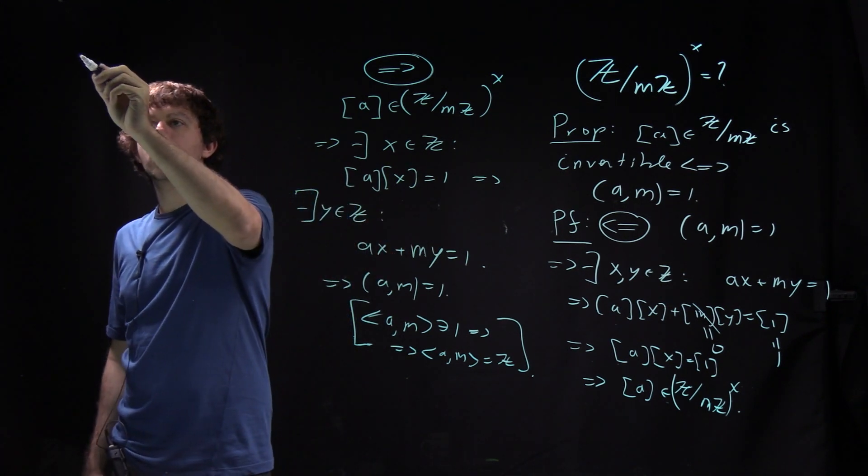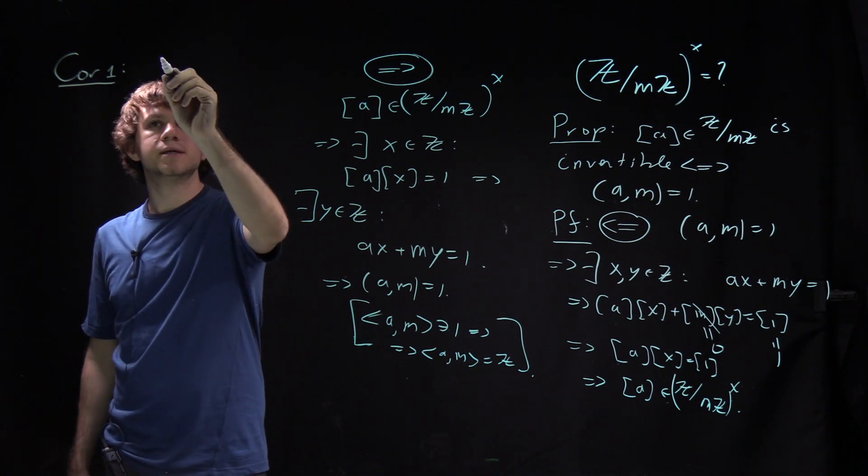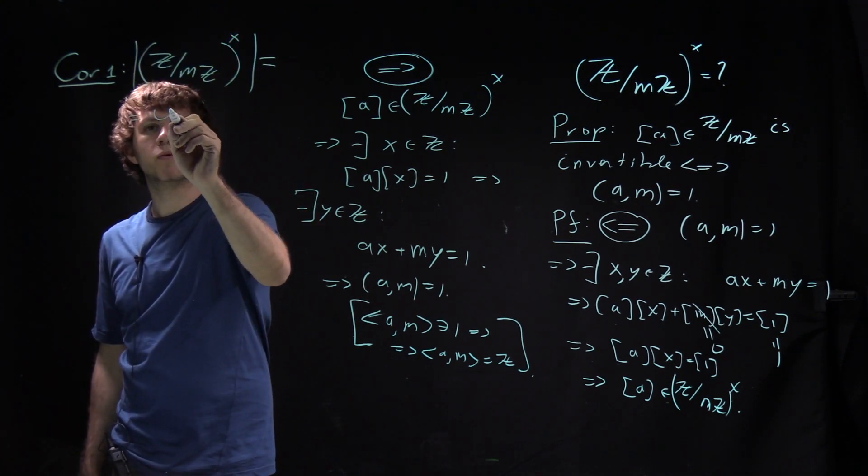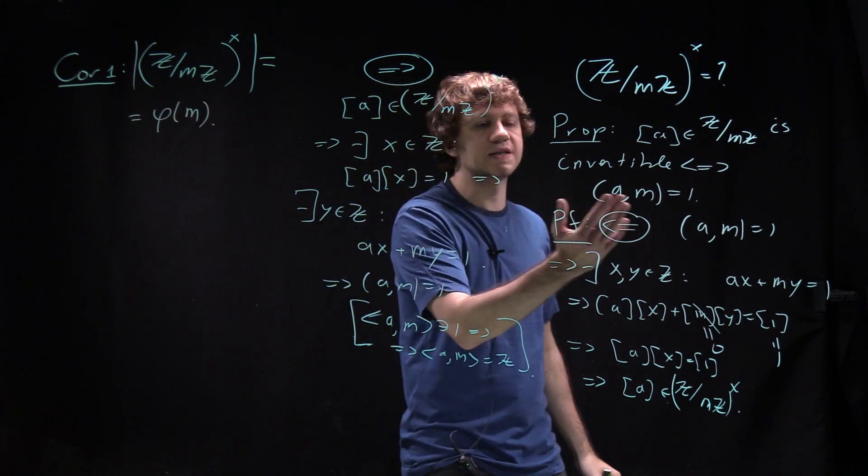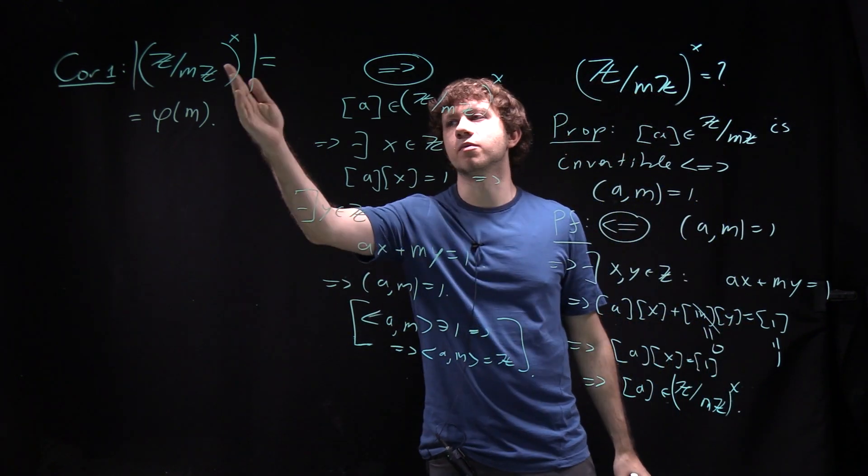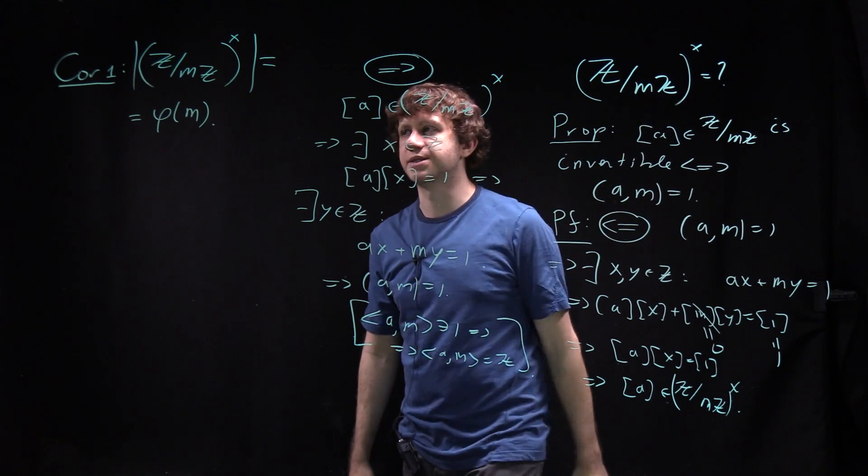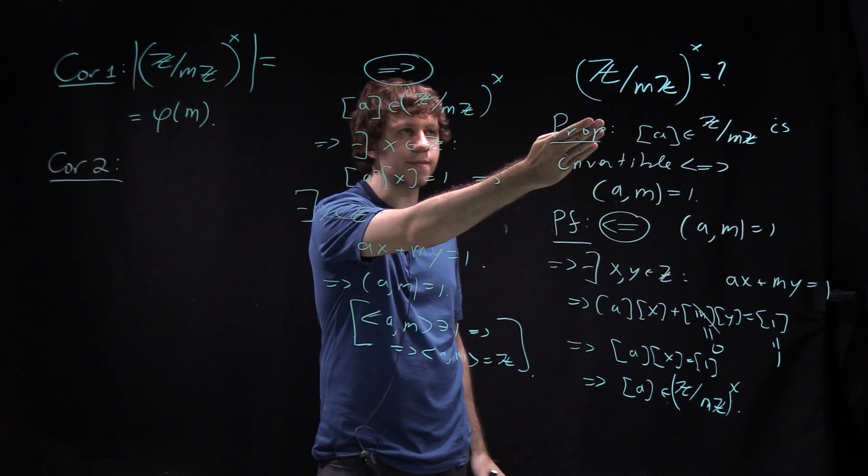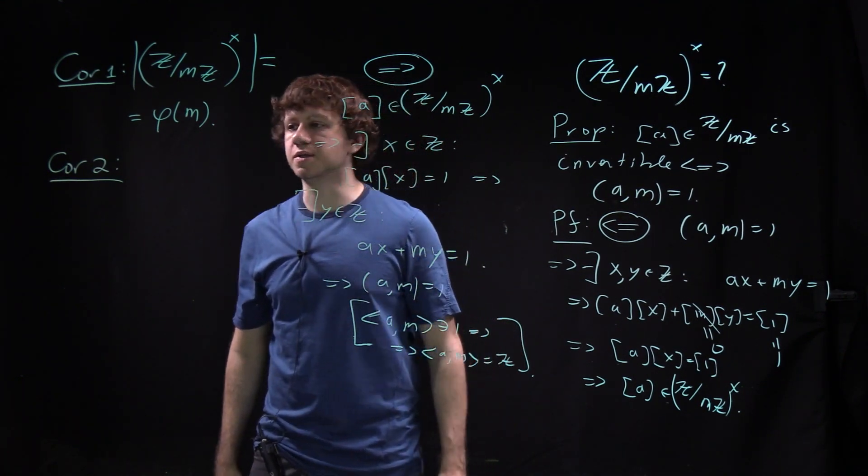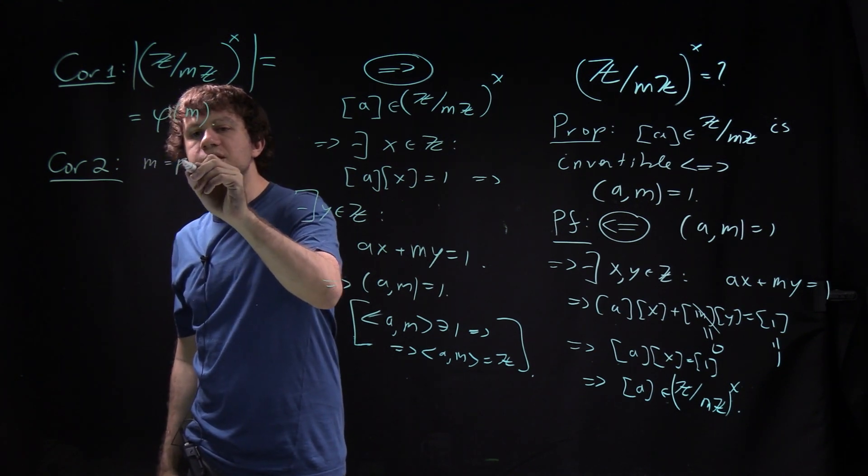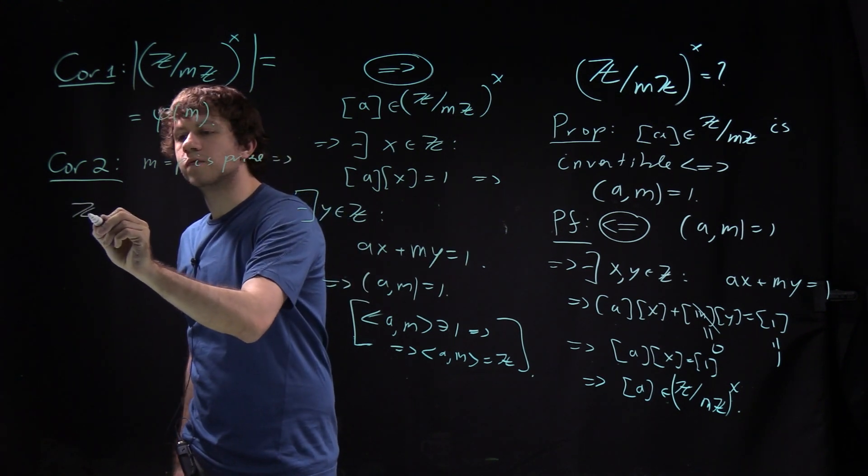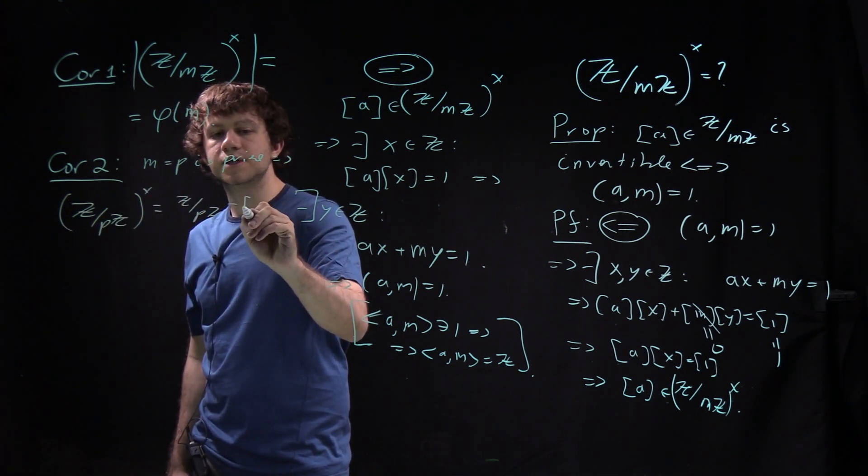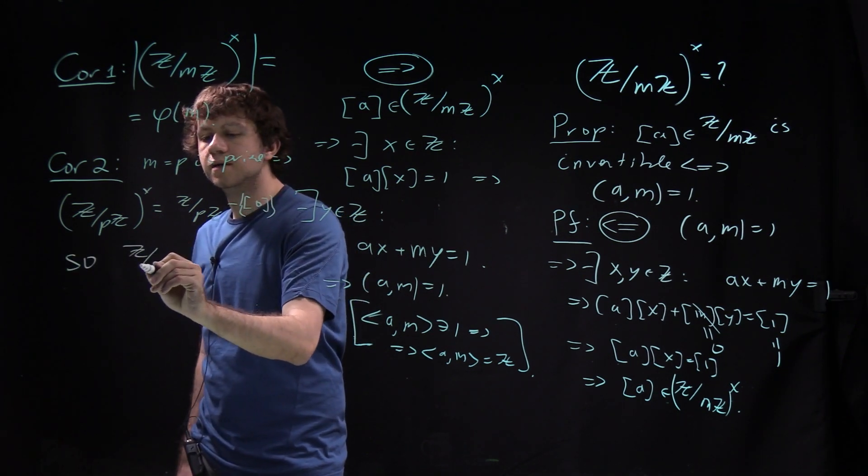We have two corollaries. Corollary one: the order of Z over mZ times is given by the Euler function phi of m. By definition, this is the number of elements coprime to m from 0 to m minus 1. We take less than m to take each class just once. Corollary two: if m equals p is prime, then any number less than p is coprime to p, so Z over pZ times is just Z over pZ without the 0 class. Therefore Z over pZ is a field.